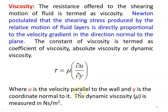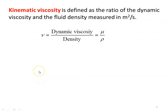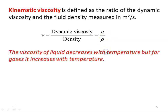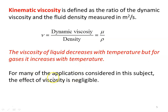Here u is the velocity parallel to the wall and y is the coordinate normal to it. Dynamic viscosity mu is measured in Newton-second per meter square. Kinematic viscosity is defined as the ratio of dynamic viscosity to fluid density, measured in meter square per second: nu equals mu divided by rho. The viscosity of liquids decreases with temperature, but for gases it increases with temperature. For many applications in this subject, the effect of viscosity is negligible, but we should know what dynamic and kinematic viscosity are.